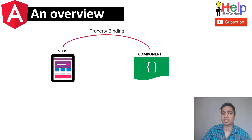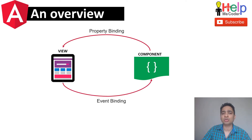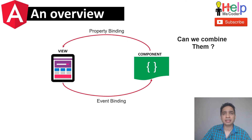If you want to transfer data from the component to the view side, you use property binding — the variables defined in the component class can be accessed on the view side using property binding or interpolation. If you want to send information back from your view page or form to the component class, you use event binding. Together, this forms a cycle that essentially looks like two-way binding.